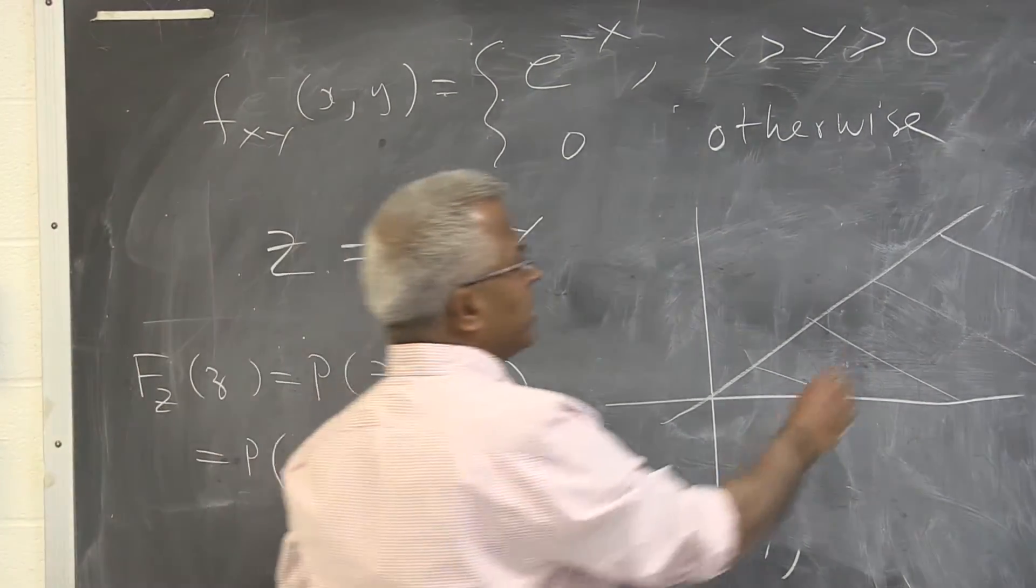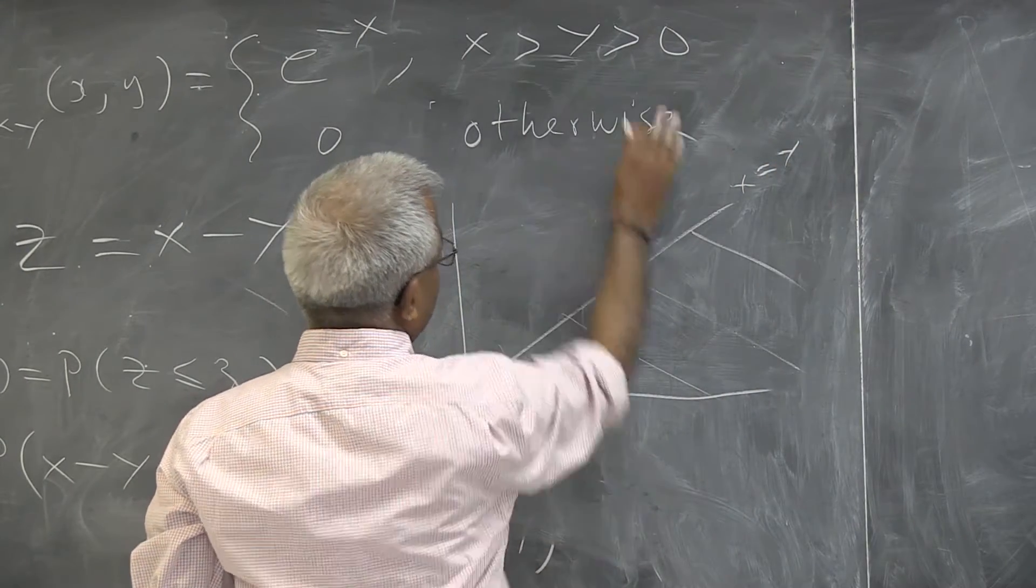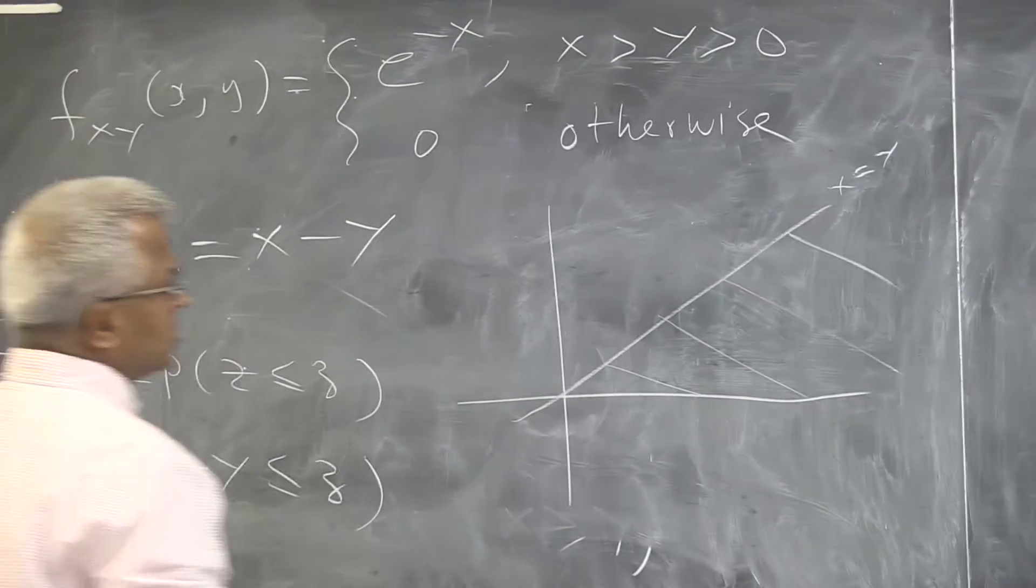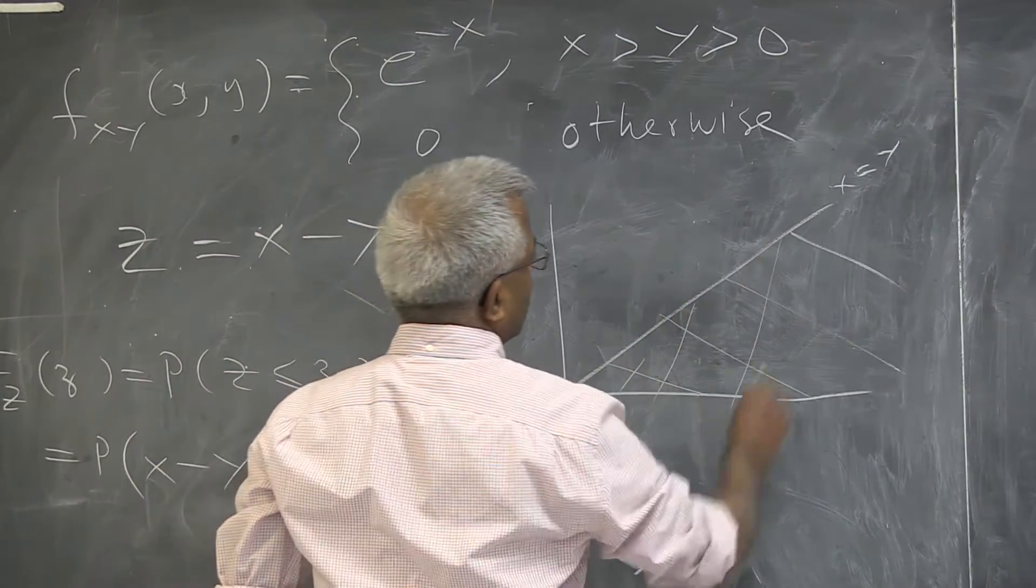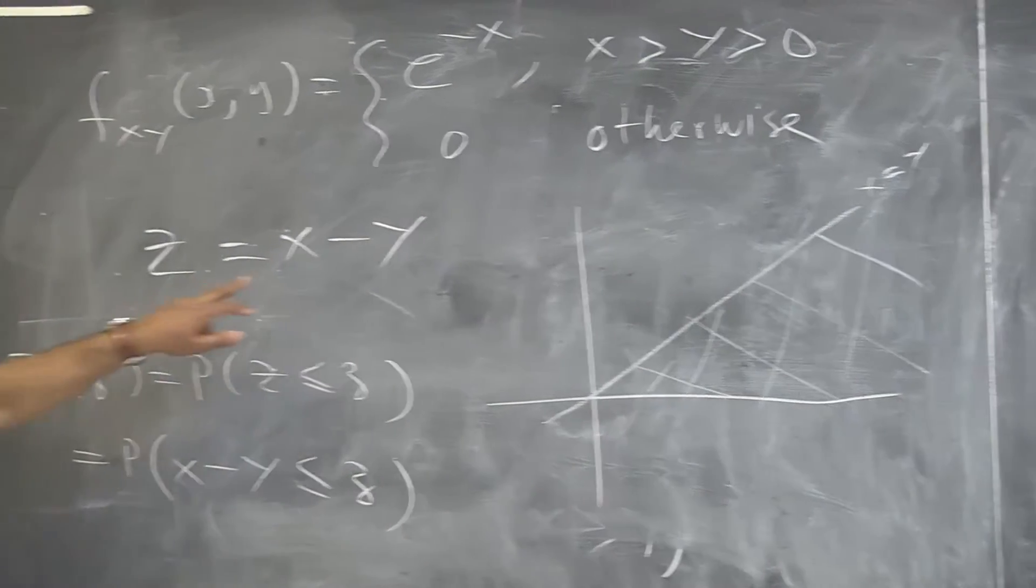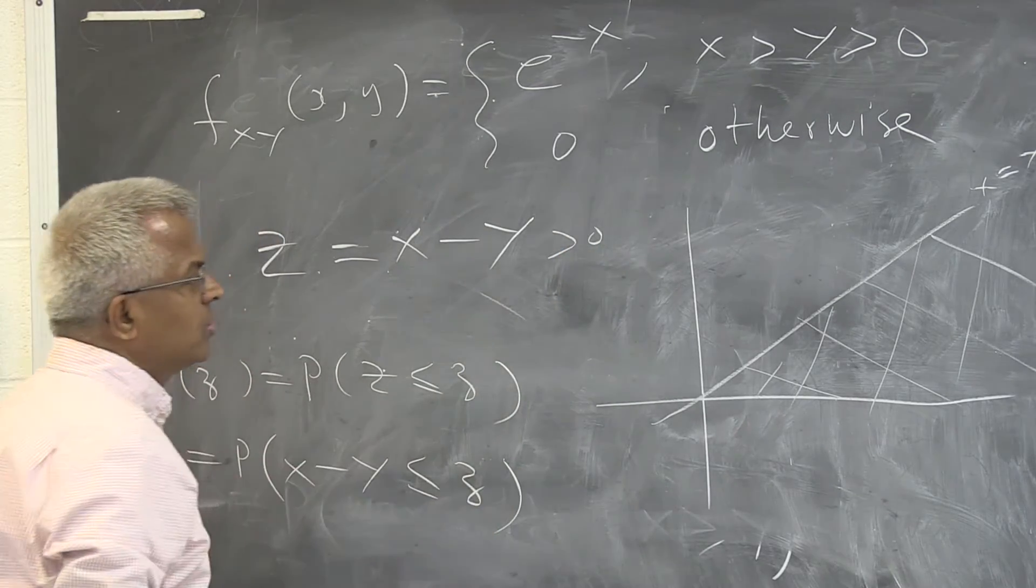This is the line x plus y. The density function is valid here, in this region only. And of course, since x is greater than y, z will be always positive.